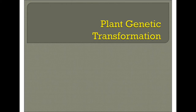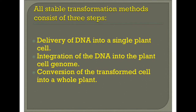Plant genetic transformation. All stable transformation methods consist of three steps: delivery of DNA into a single plant cell, integration of DNA into the plant cell genome, and conversion of the transformed cell into a whole plant.